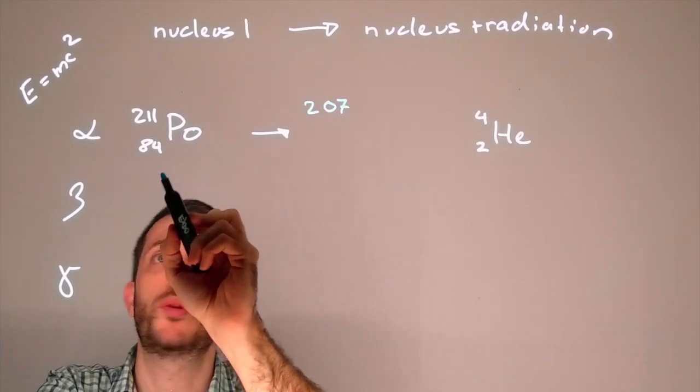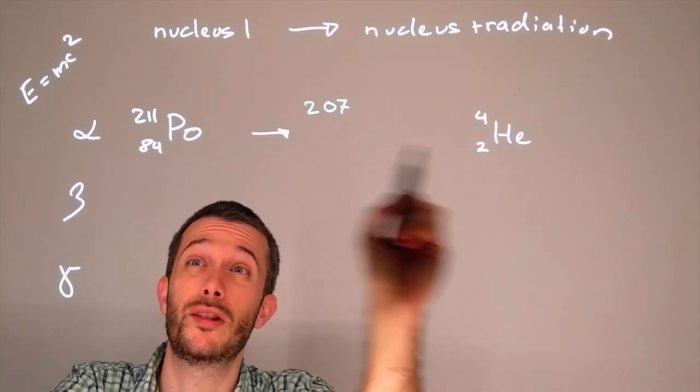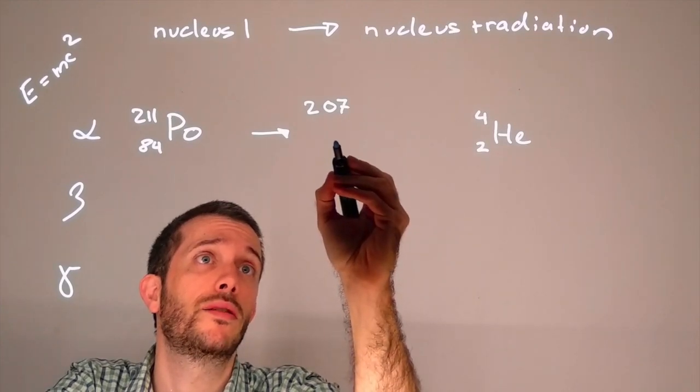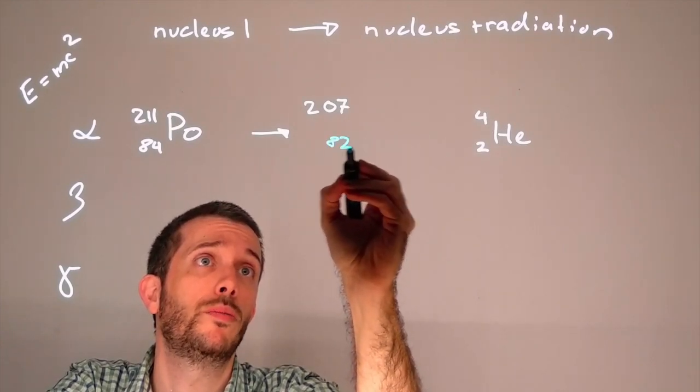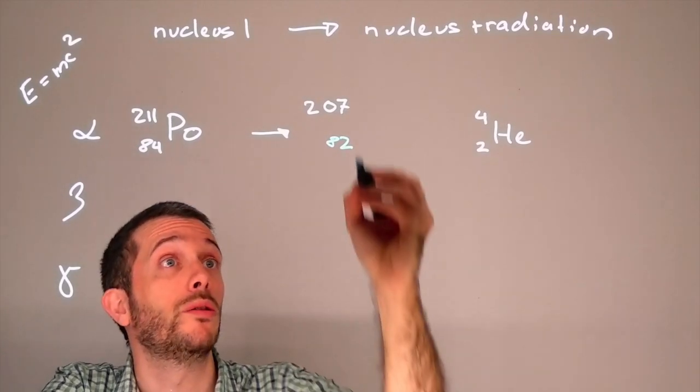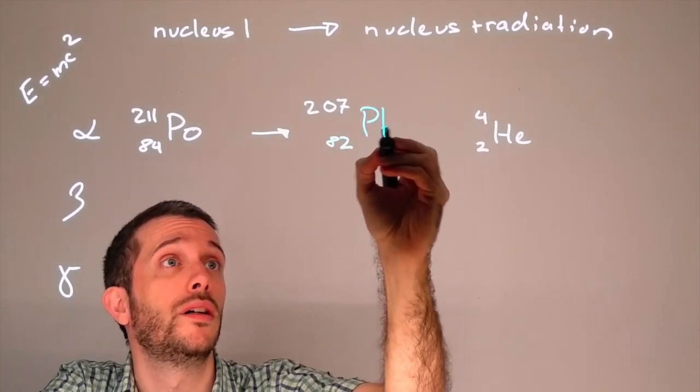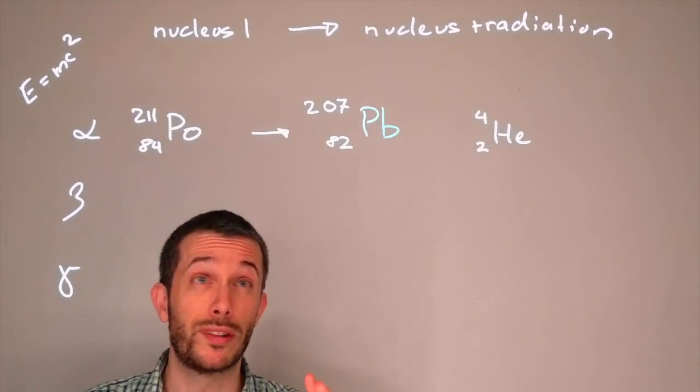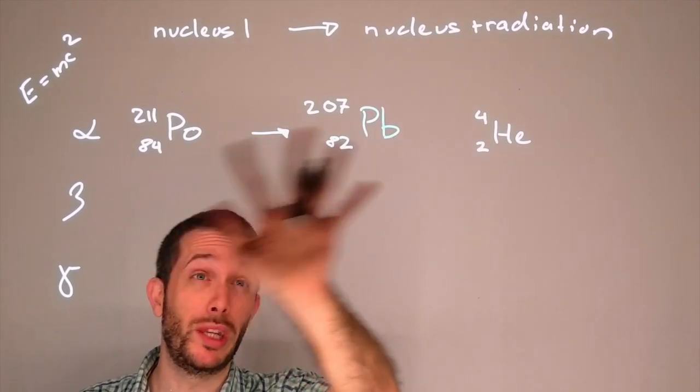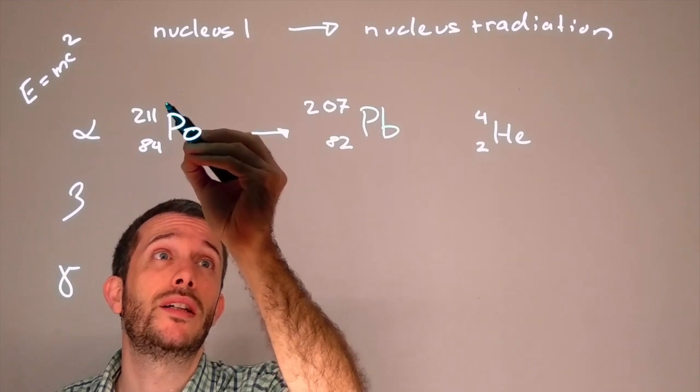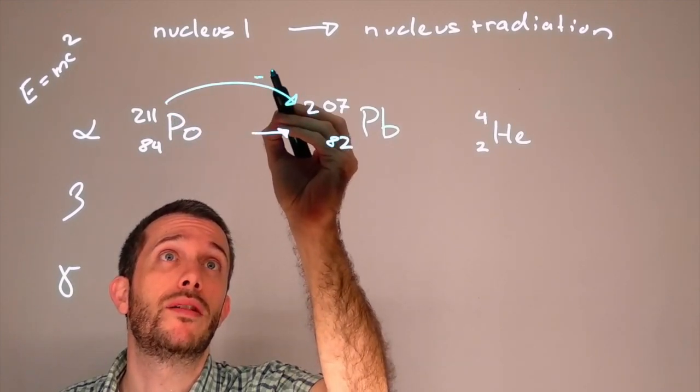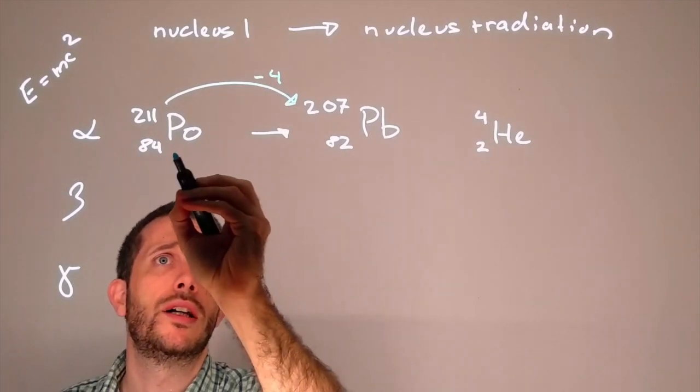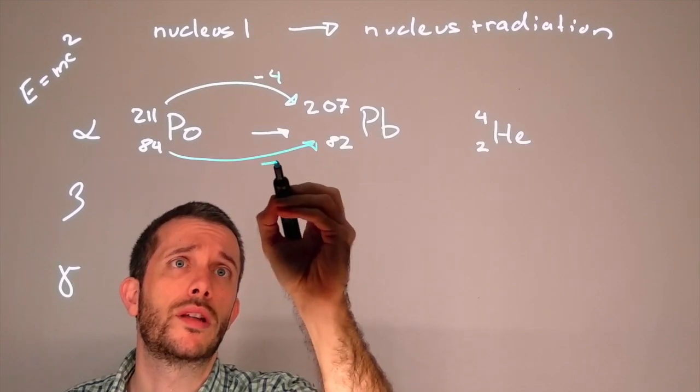And now for the number of protons, I have 84 protons here, I have 2 protons here. I have a total charge of 84 on the left. To get 84 on the right, I need to be having 82 protons. And if I go look this up in the periodic table, lead will be my element with 82 protons. It doesn't have to be polonium, it doesn't have to be lead, it can be all kind of different things. The important thing is here, the number goes down by minus 4, because we are forming helium 4. And the number down here, the number of protons, goes down by minus 2.